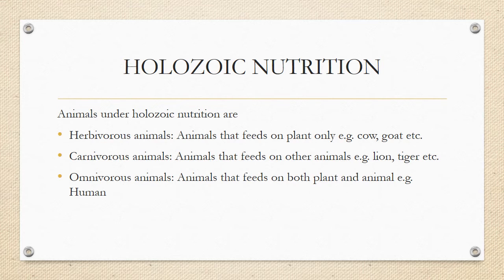Under holozoic nutrition, the first type is herbivorous animals — these are animals that feed on plants only; examples are cows and goats. The second type is carnivorous animals — they are flesh eaters that eat other animals; examples are lions and tigers. Omnivorous animals feed on both plants and animals, and human beings are a very good example.